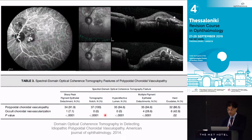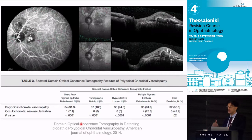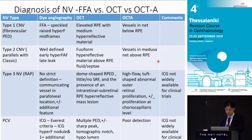Certain OCT features may suggest polypoidal: multiple PEDs, notches in between, and an extra lumen-like structure in the middle. A study had a gold standard ICG diagnosis and found that certain OCT features are very good at separating type 1 CNV from polypoidal, where you may consider argon laser or PDT adjunctive therapy. PCV does occur in Caucasians. The sharp peak PED, notches between them, and lumen-like changes in the middle on OCT — if you see that, ICG may well confirm polypoidal. A summary slide distinguishes type 1, type 2, RAP/chorio-retinal anastomosis, and polypoidal choroidal vasculopathy.